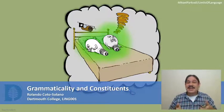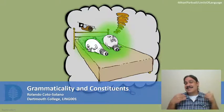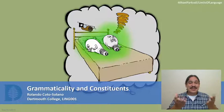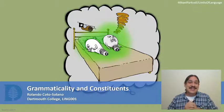Grammaticality, by the way, is the property that allows us to say sentences like 'colorless green ideas sleep furiously.'